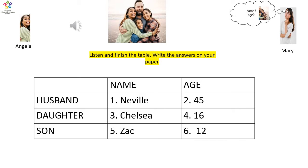Hi Angela. Hi Mary. Nice to see you. Nice to see you too, Angela. Angela, are you married? Yes, I am. Do you have any children? Yes, I do. How many children do you have? I have two. One daughter and one son. What's your husband's name? My husband's name is Neville.